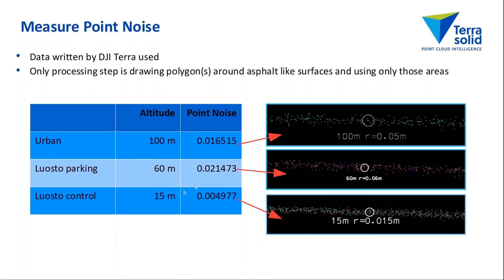In the three datasets, on asphalt-like surfaces, Measure Point Noise gives me values of about 17 millimeters in the 100-meter altitude dataset, about 21 millimeters in the 60-meter dataset, and about 5 millimeters in the 15-meter dataset. We can see that the point-to-point noise gets smaller at a low altitude. What is a little surprising is that the DJI dataset from a higher altitude has a smaller point-to-point noise than our dataset from 60-meter altitude. I don't know if it's a matter of the hardware unit or some other flight parameters.